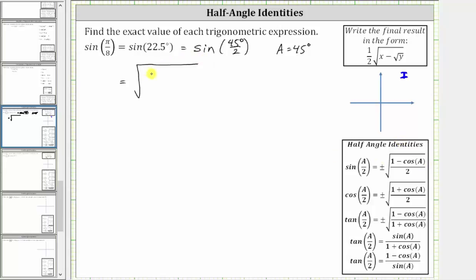Under the square root, we have one minus cosine a, which is one minus cosine 45 degrees, and all this is divided by two, where again, the two is under the square root.